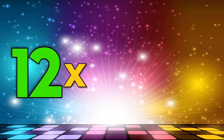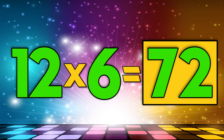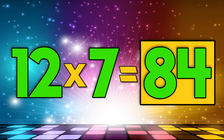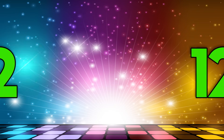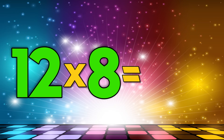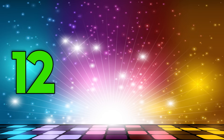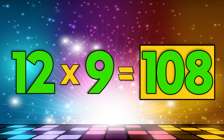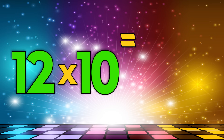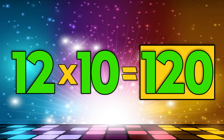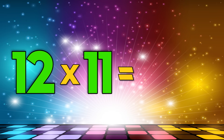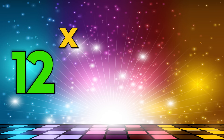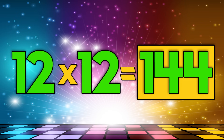Twelve times six is seventy-two, twelve times seven is eighty-four, twelve times eight is ninety-six, twelve times nine is one-hundred-eight, twelve times ten is one-hundred-twenty, twelve times eleven is one-hundred-thirty-two, twelve times twelve is one-hundred-forty-four.